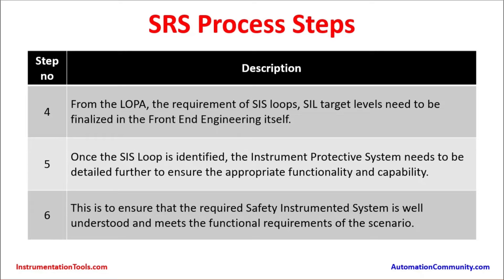In step number five, once the SIS loop is identified, the instrumented protective systems need to be detailed to ensure appropriate functionality and capability. In step number six, this is to ensure the required safety instrumented system is well understood and meets the functional requirements of the scenario, providing clarity about SIS implementation and confirming that the hazard is being protected for the particular scenario.